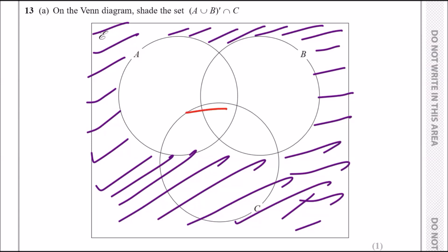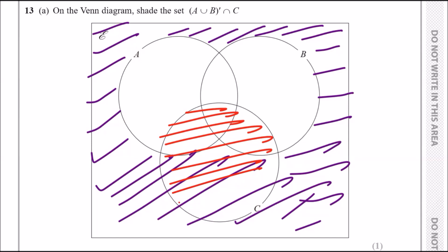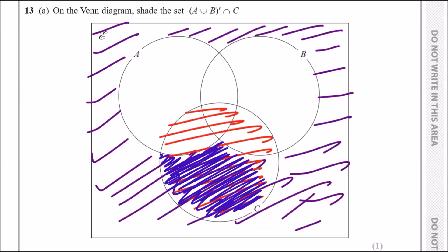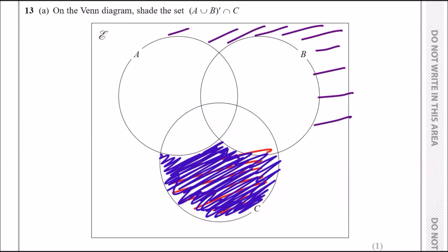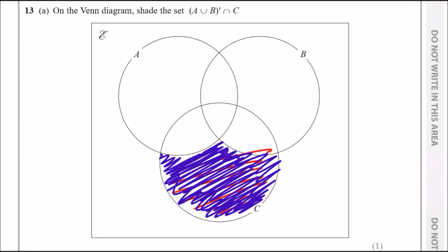That complement region then intersects with C, so we shade C in a second color and find the overlap. Only the portion of C that lies outside both A and B gets shaded as the final result. In exams, using two different patterns (e.g., diagonal stripes in different directions) helps identify the intersection clearly.